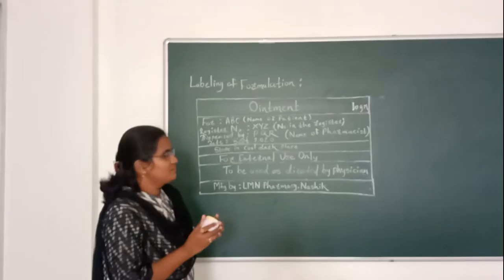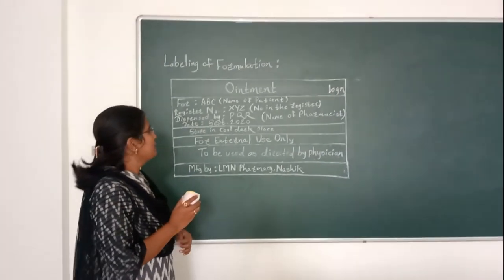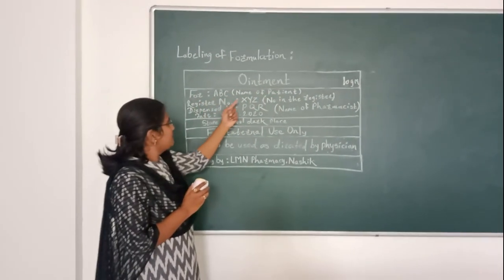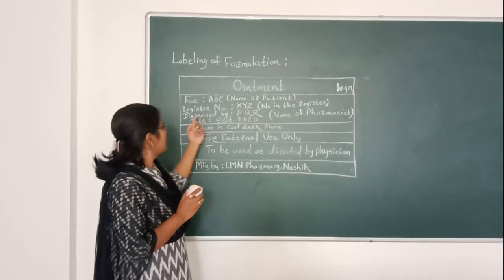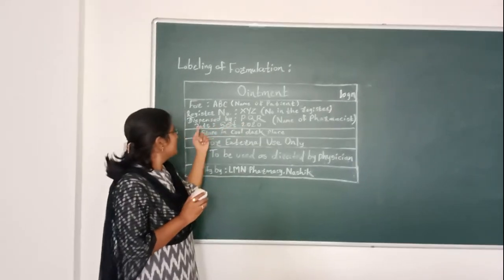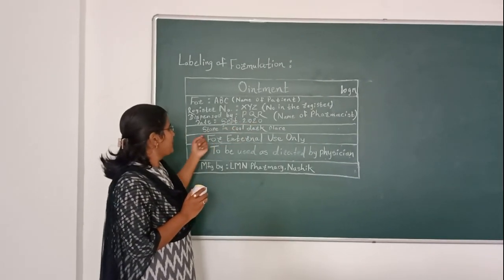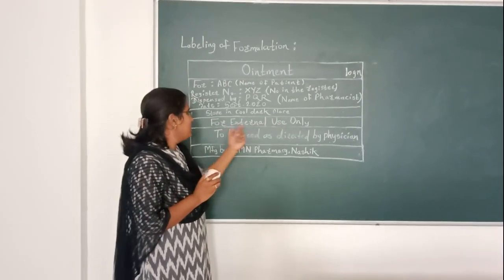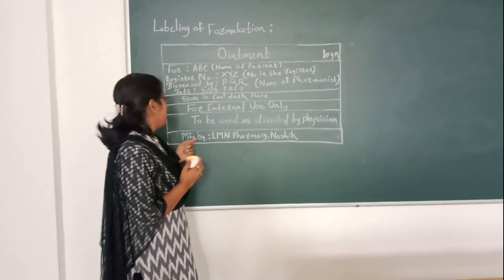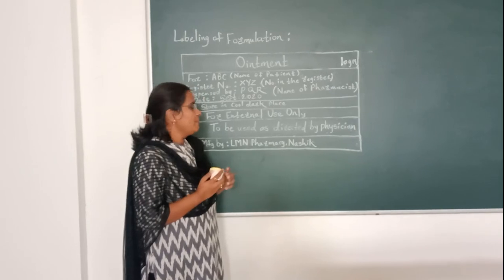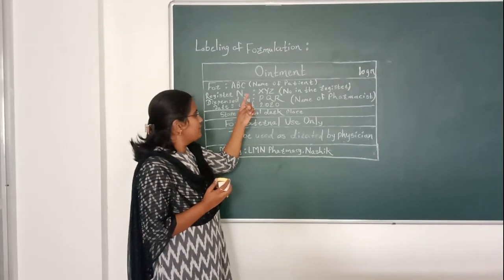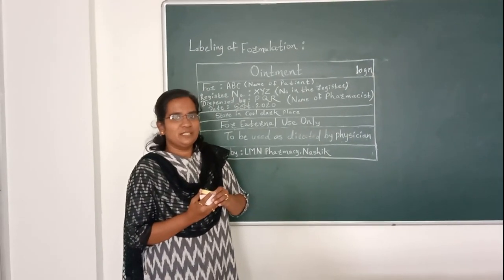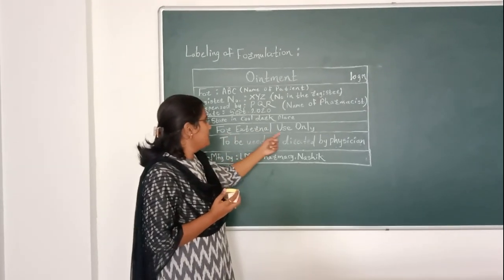After cooling, we are going to transfer this ointment into the container and proceed to the labeling part. The label details are: name of patient — ABC; register number — SYZ; dispensed by — EQM (name of pharmacist); date — September 2020; storage condition — for external use only, to be used as directed by physician; manufactured by the pharmacy lab. Result: 10 grams of ointment is submitted in a white glass bottle for inspection, with special instruction on the label: 'For external use only.'